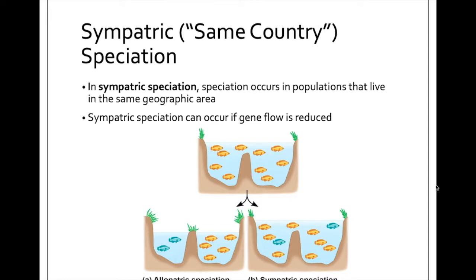The second mechanism of speciation — or classification is maybe a better word — is sympatric speciation. Where 'allo' meant other, 'sym' means together. So sympatric means that speciation is going to happen in an environment where they're not geographically isolated. They live in the same geographic area, but for some reason or another, there's something that's preventing or reducing gene flow.